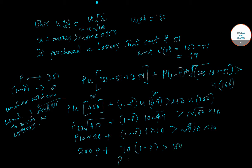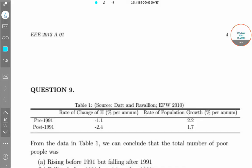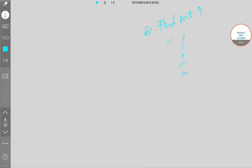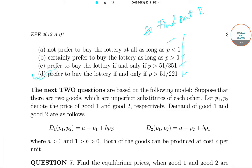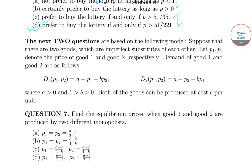Solving this condition gives us the threshold probability, and the answer corresponds to option p greater than 51 by 221. Moving on to the next question: suppose there are two goods which are imperfect substitutes, and let p1 and p2 denote the prices of good one and good two respectively, with demand functions given.